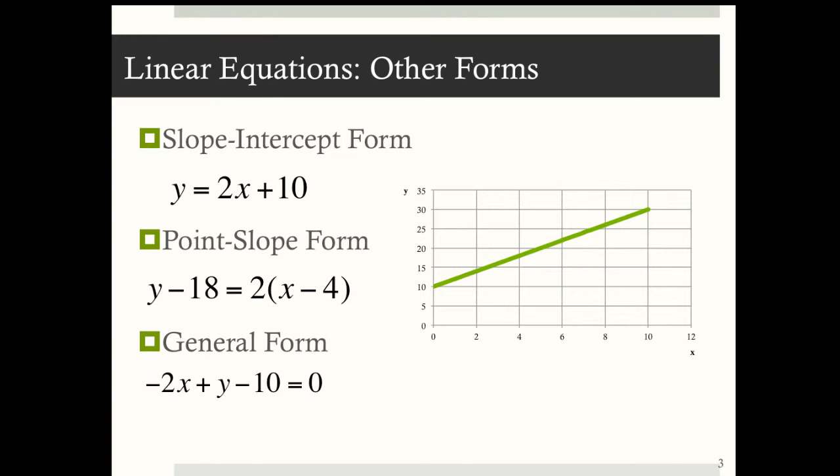In other words, y equals 2x plus 10 is the same exact thing as saying y minus 18 equals 2 times x minus 4, which is the same exact thing as saying negative 2x plus y minus 10 equals 0.